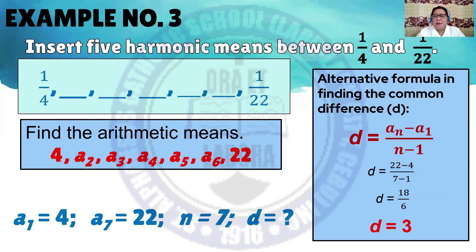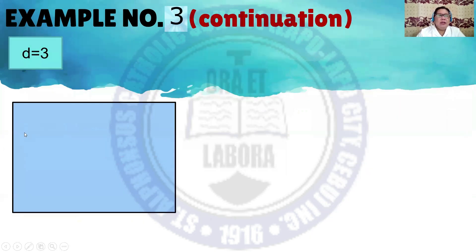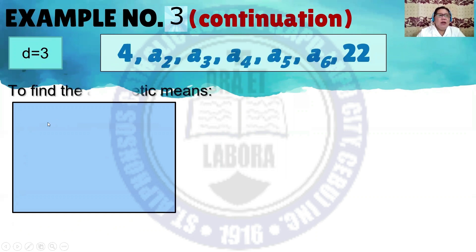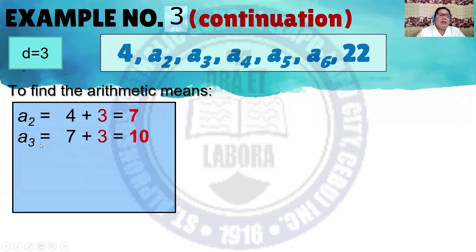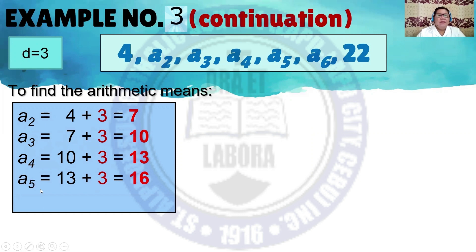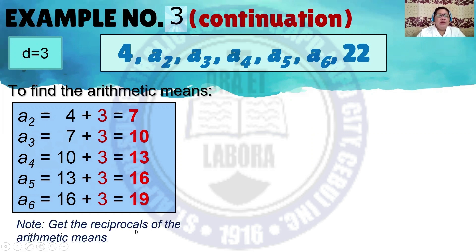Since the common difference is 3, we add it to the first term 4 to find the arithmetic means. A sub 2 equals 4 plus 3, equals 7. A sub 3 equals 7 plus 3, equals 10. A sub 4 equals 10 plus 3, equals 13. A sub 5 equals 13 plus 3, equals 16. A sub 6 equals 16 plus 3, equals 19.